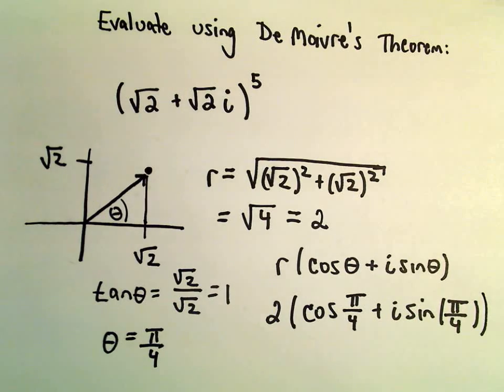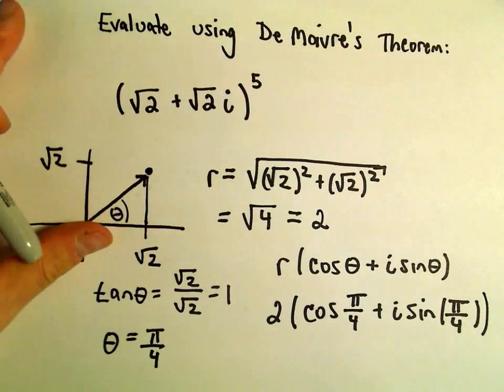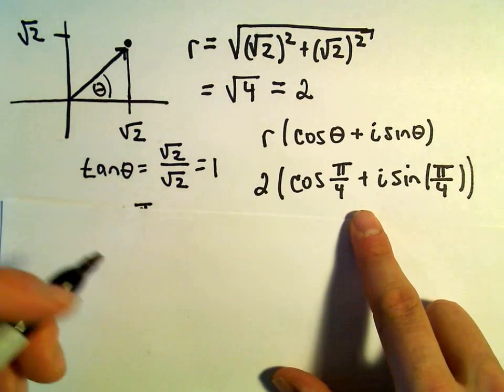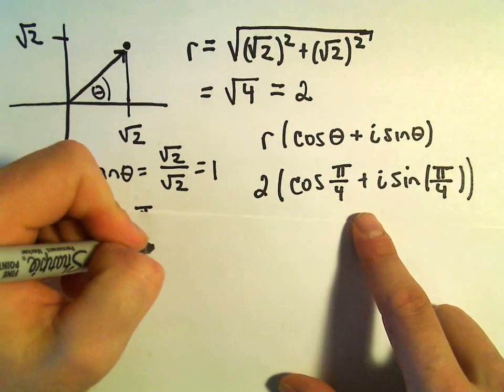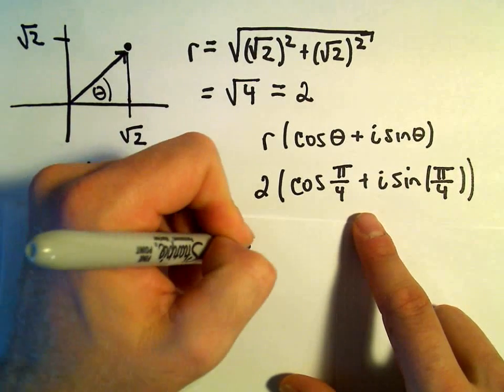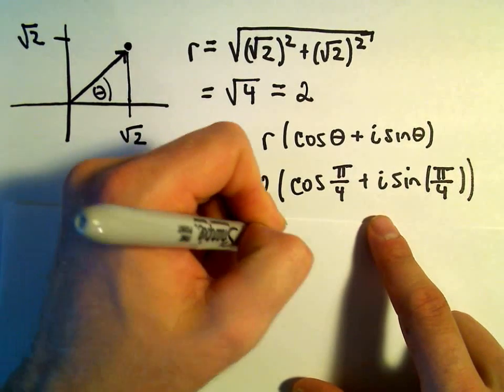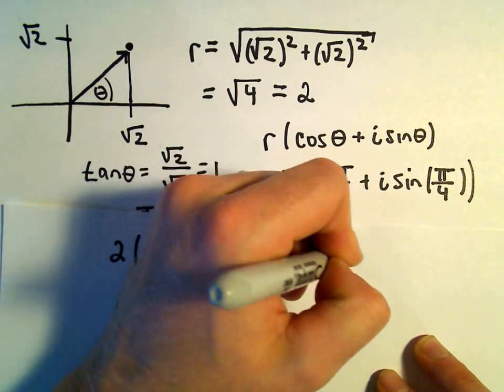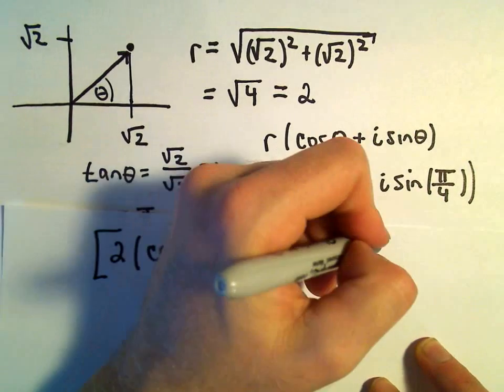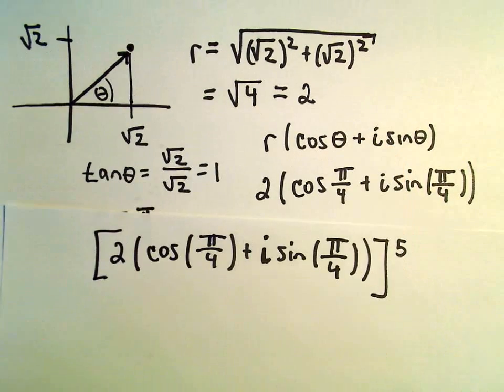And now we can use De Moivre's theorem to actually simplify this down. Okay, so really this is the number that we're taking to the fifth power. So 2 cosine of π/4 plus i sine of π/4, all of that now is being raised to the fifth power.